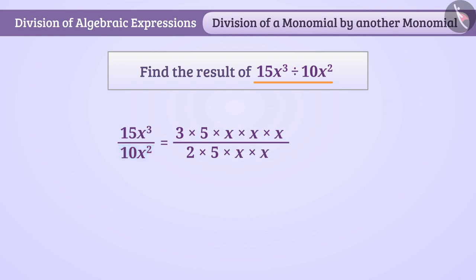Here, 5 multiplied by x multiplied by x are common to numerator and the denominator. So we will cancel them in the numerator as well as denominator. We call this method as cancellation. This gives us result 15x cube divided by 10x square as 3x divided by 2.